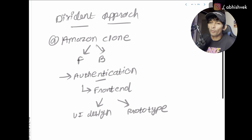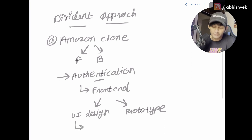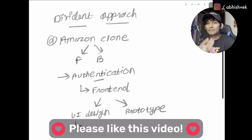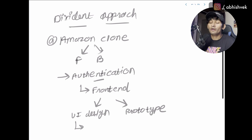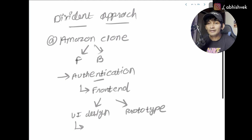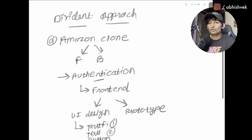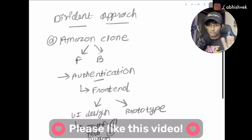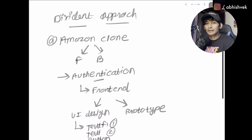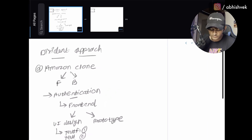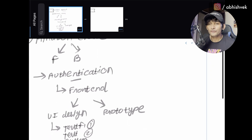While building the authentication page, you need to think about what you need for the UI design. For the minimal use case, you'll require two different text fields — for email and password — and a single button, let's say an authenticate or login button. Obviously there will also be a forgotten password button, sign-up button, etc., but let's go with the minimal approach.